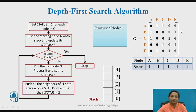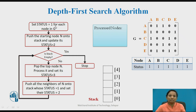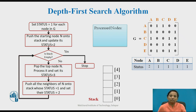Now we will see the DFS algorithm applied to graph G using its adjacency matrix representation. We start traversing with node A. All node statuses are already set to 1. Push node A onto the stack and change its status from 1 to 2. The stack is not empty, so pop node A and change its status from 2 to 3 — node A is processed. The adjacent nodes of A are B and C, so both are pushed onto the stack and their statuses are changed from 1 to 2.